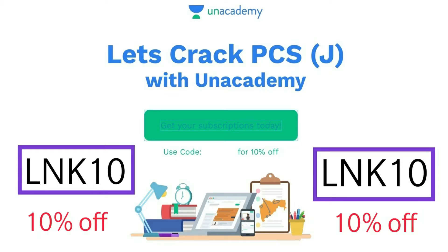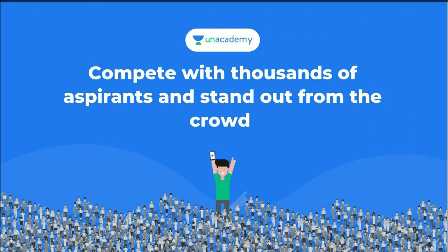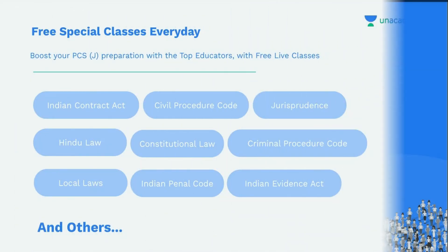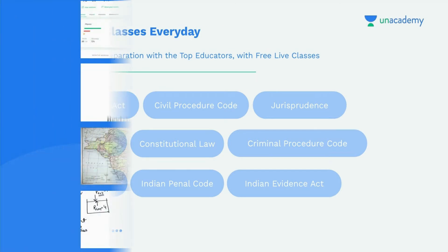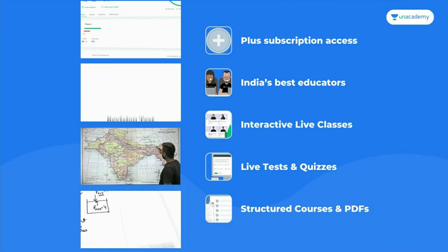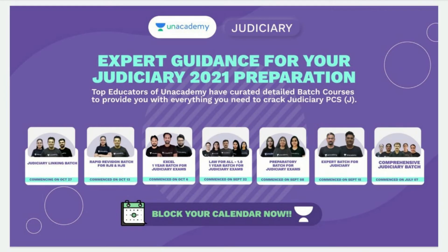Let's crack the PCSJ with Unacademy. To get a discount on the subscription plan, use the code LNK10 to get a 10% discount. In Unacademy, you can compete with thousands of aspirants and stand out from the crowd. You will get free special classes every day on major acts, minor acts, and local acts. With that, you will have a plus subscription access, India's best educators, interactive live classes, live tests and quizzes, structured courses and PDFs available, and expert guidance for your judicial preparation.